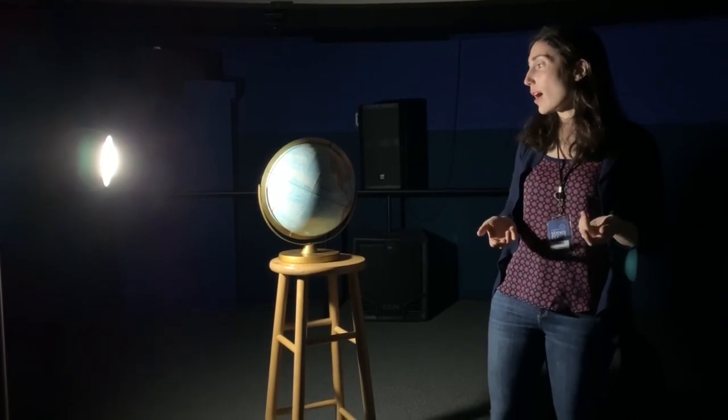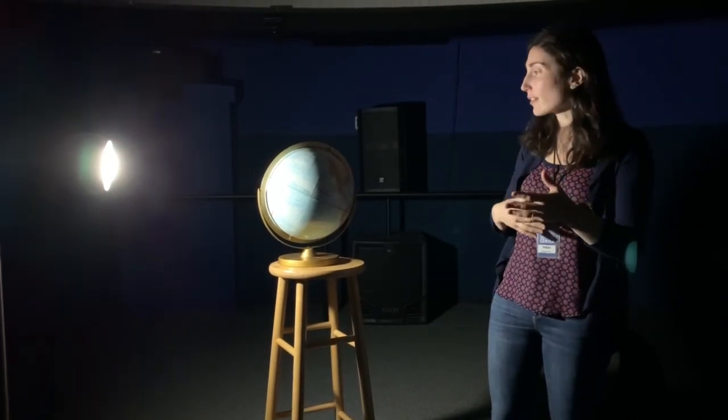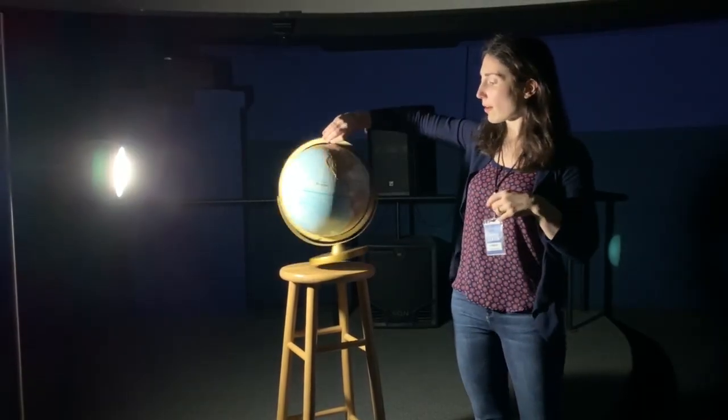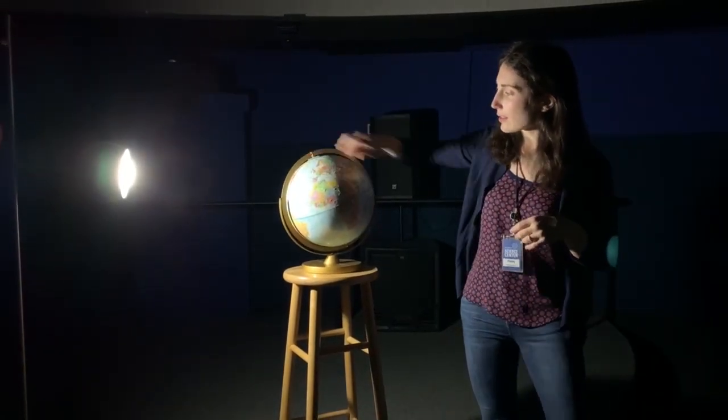And then the opposite is true half a year later. So half a year later our planet will have traveled around halfway around its orbit and then will be more like this.